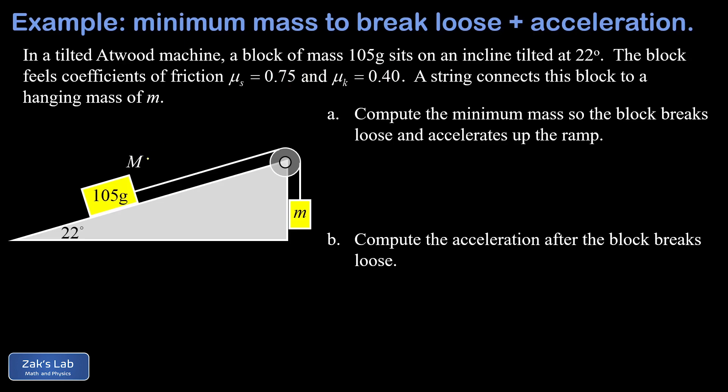So notice in the diagram that I've labeled the 105-gram block on the ramp as a capital M, and the reason I did this is to make it so we can keep everything symbolic in our solutions. We're going to start things out with a complete force diagram on this 105-gram block, and we start with the force of gravity that always pulls exactly straight down, and it has a magnitude of big M times G.